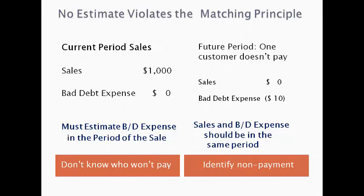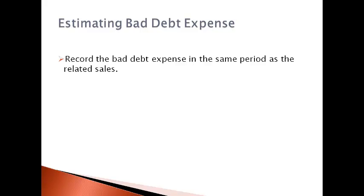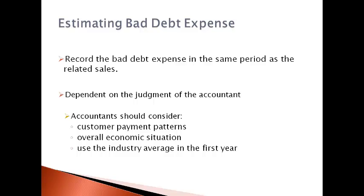The company must estimate and report the bad debt expense in the period of the sale. Bad debt expense is estimated using historical customer payment patterns. The actual amount of bad debt expense is not known and must be estimated in the same period as the sale. When estimating the amount of uncollectible accounts, an accountant should consider customer payment patterns in the overall economic situation. Companies in their first year of business generally use the industry average. The amount of bad debt expense reported on the income statement is dependent on the judgment of the accountant.